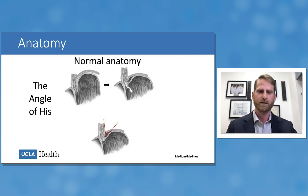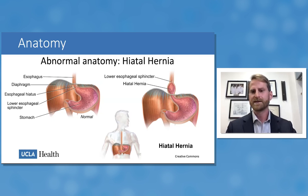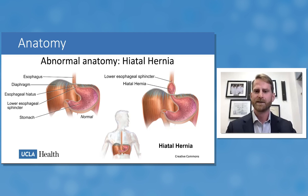The angle of His works like a one-way valve in conjunction with the lower esophageal sphincter to prevent reflux. When the phrenoesophageal ligaments are disrupted, the stomach can travel through the esophageal hiatus from the high-pressure environment of the abdomen up into the low-pressure environment of the chest. This results in a portion of the stomach traveling up into the chest — that is the hiatal hernia.